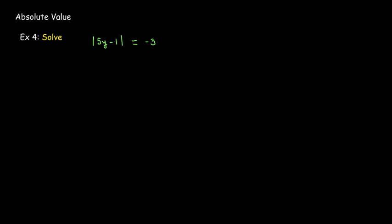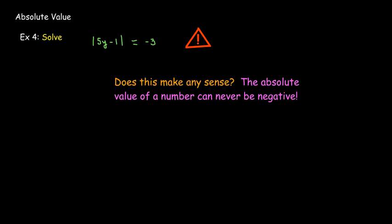Now, before I just start mechanically trying to solve this, let's think about this equation. I have the absolute value of 5y minus 1 equaling negative 3. Now, wait a minute. That doesn't make any sense. How can you have the absolute value of a number equaling negative 3? That's impossible. There is no way you can have that situation. And so here, the solution set is empty. No work is necessary.